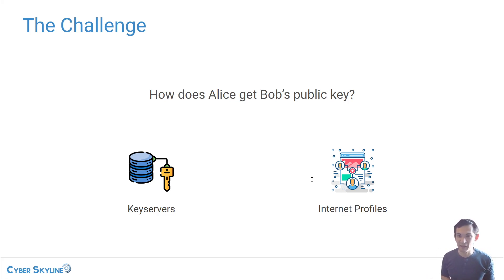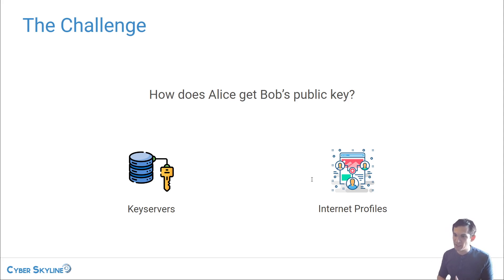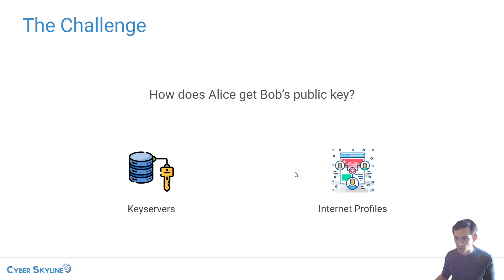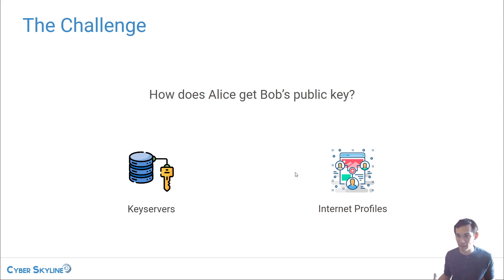The next method is internet profiles, which is very broad. Internet profiles can mean social media pages — your Facebook, LinkedIn, GitHub — or your personal blog, basically anywhere you have an online identity. So let's say Bob posts his PGP key on his social media profiles, his GitHub, maybe his personal website. If Alice searches for Bob and finds both his website and GitHub profile listing the same PGP key, she might feel confident it's actually Bob's key, and it's much more convenient than going through a key server database.